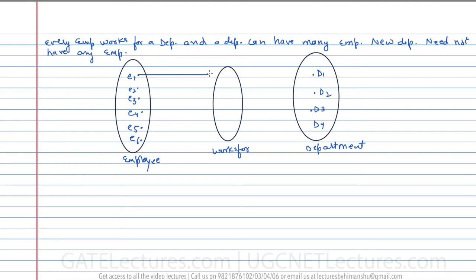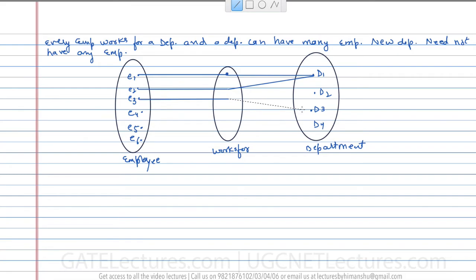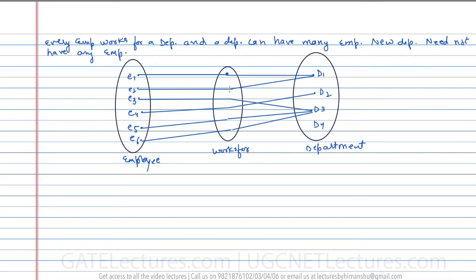Assuming employees e1 through e6 and departments d1 through d4: employee e1 works for d1, e2 works for d1, e3 works for d3, e4 works for d2, e5 works for d3, and e6 works for d3. Every employee is assigned a department. Department d1 and d3 have more than one employee. Department d4 has no employee.